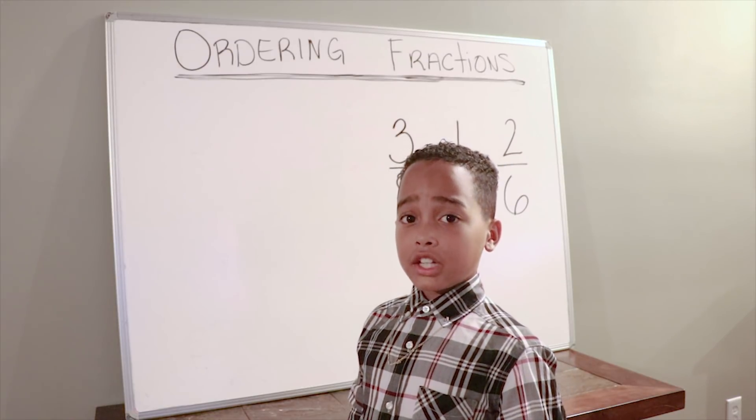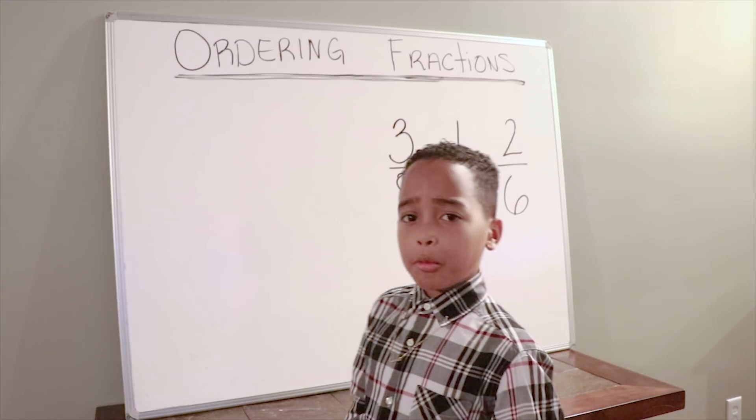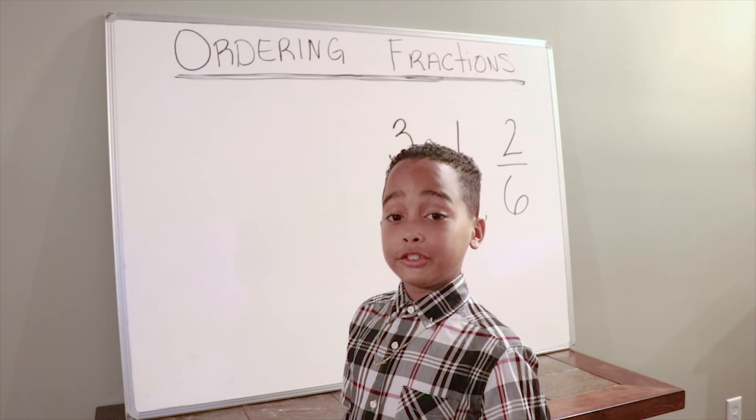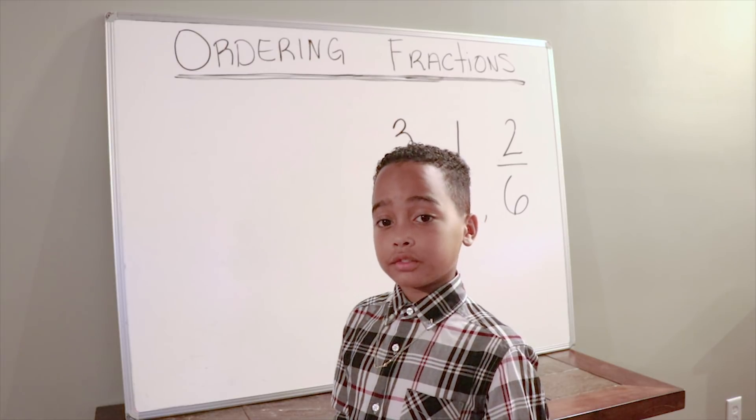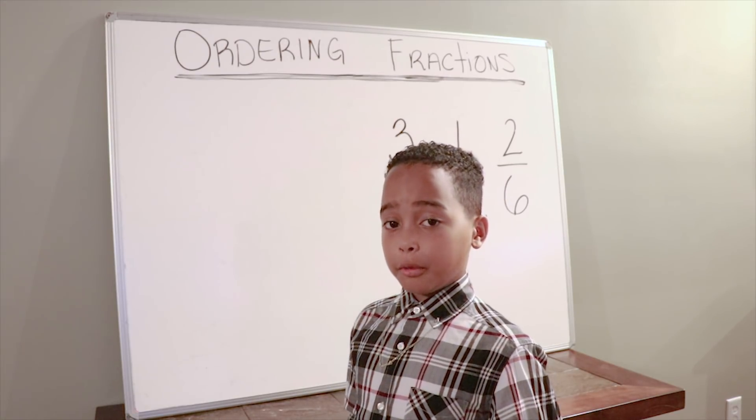We're first going to find the least common multiple of 8, 4, and 6. The least common multiple is the lowest quantity that is a multiple of 2 or more given quantities. In this case it will be 24, if you know your multiplication tables.